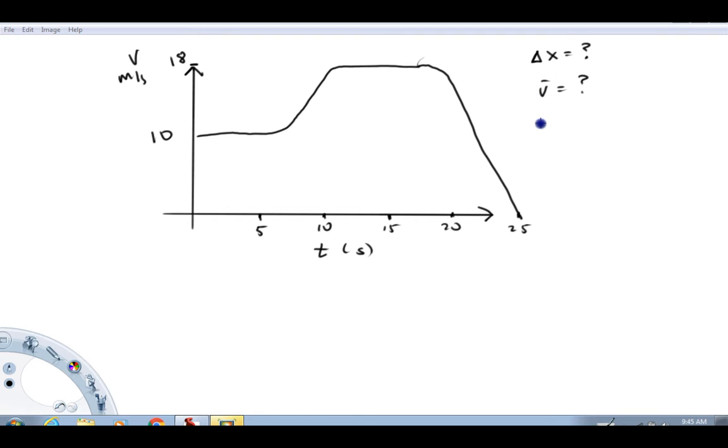Average velocity is delta x over delta t. If we have a delta t, and in this case we do, this time interval looks like it goes from 0 to 25 seconds. All we need is the total delta x here. We take the total delta x divided by the delta t and we'll have the average velocity. So most of this problem boils down to finding the delta x, the total displacement during the 25 seconds.